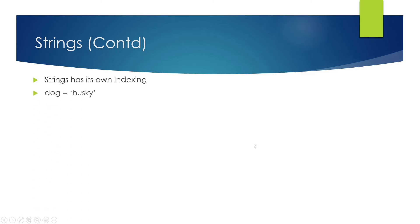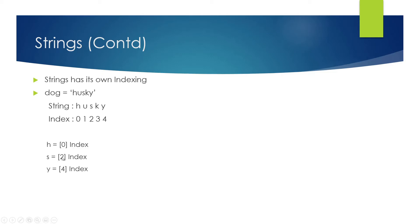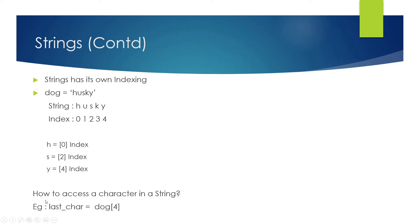Strings have their own indexing. Let's take an example: 'dog' equal to 'husky'. The string is 'husky' and the indexing is 0, 1, 2, 3, 4 — it always starts from 0. There are 5 characters total but indexing starts from 0. So 'h' is at index 0, 's' is at index 2, and 'y' is at index 4. To access a character, you can write 'last_car = dog[4]', which gives 'y'. Printing 'last_car' should work exactly the same. This may be a bit confusing now, but the demo will clarify it.